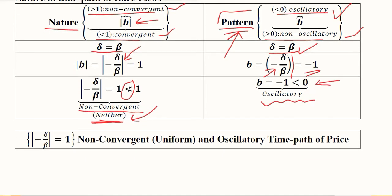We can summarize the findings: the absolute value of b is equal to 1, and it is non-convergent. We are calling it uniform because it is going to be neither convergent nor divergent. It is going to be a uniform sort of movement, and oscillatory as well.